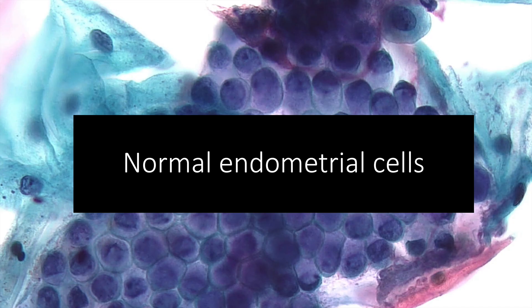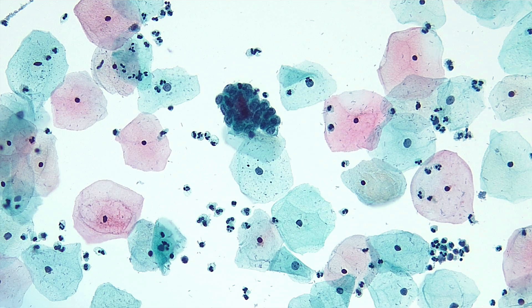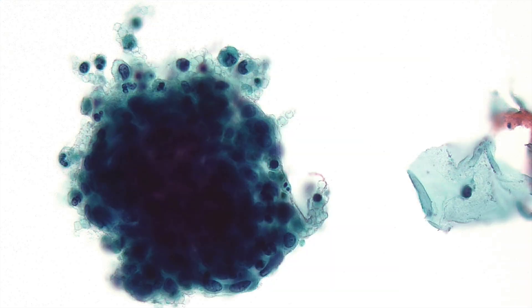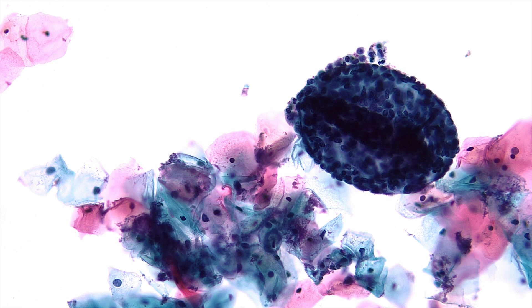Now we'll discuss normal endometrial cells. Normal endometrial cells are smaller than endocervical cells, with nuclei about the same size as an intermediate squamous cell. The nuclear chromatin can be dense and heterogeneous, and does not contain prominent nucleoli. These cells have scant cytoplasm. Intracytoplasmic neutrophils are characteristic, and classically, endometrial cells shed in tight clusters called exodus.